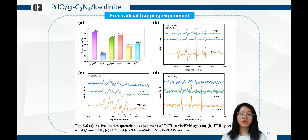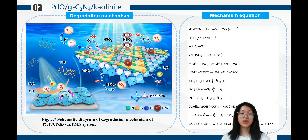We performed free radical trapping experiments and EPR tests. The active species identified by EPR are OH radicals, sulfate radicals, superoxide radicals, and singlet oxygen. Moreover, singlet oxygen is produced after the addition of PMS, and singlet oxygen also plays a dominant role. Both free radical and non-free radical pathways lead to TCH degradation, in which the non-free radical singlet oxygen plays a leading role, while OH and sulfate radicals play a lesser role.